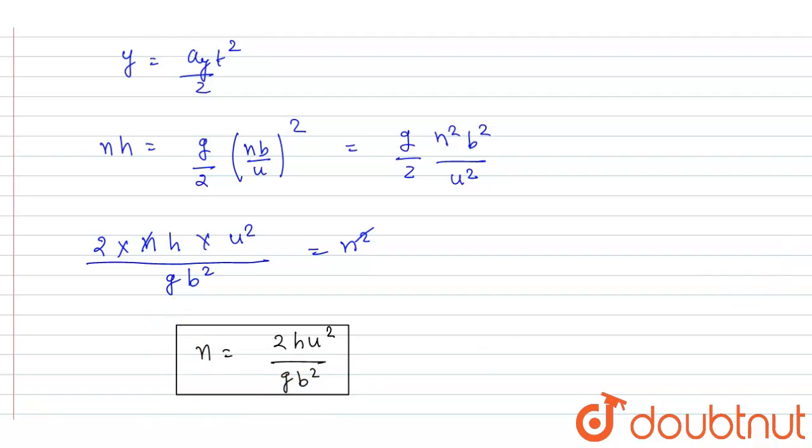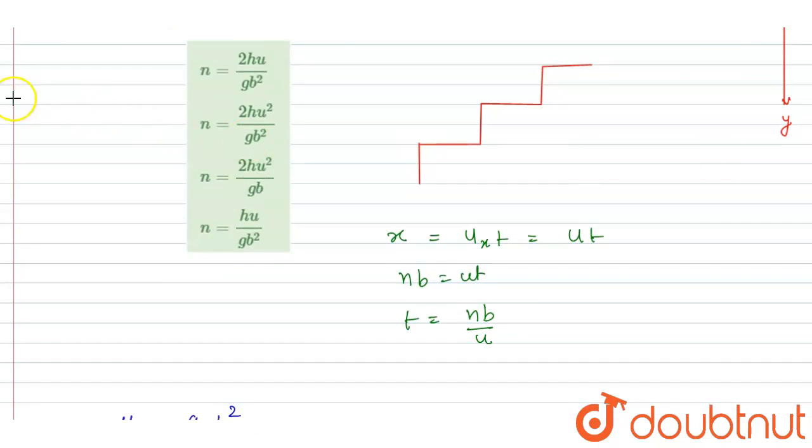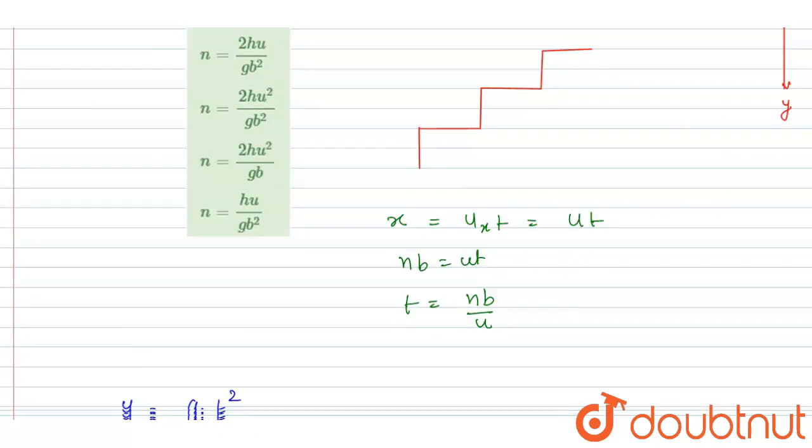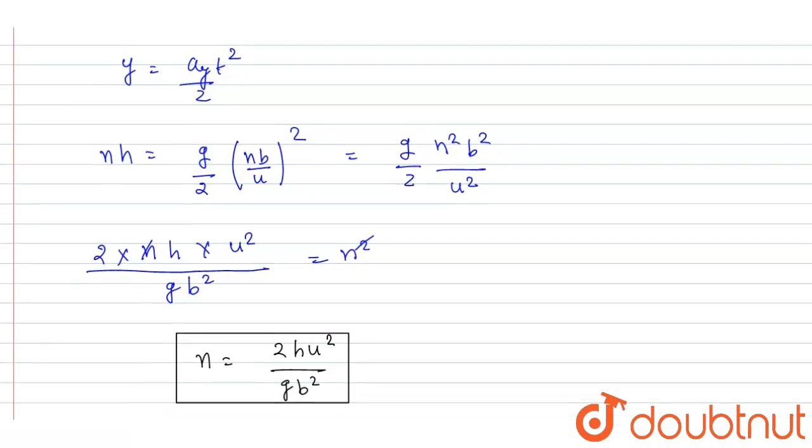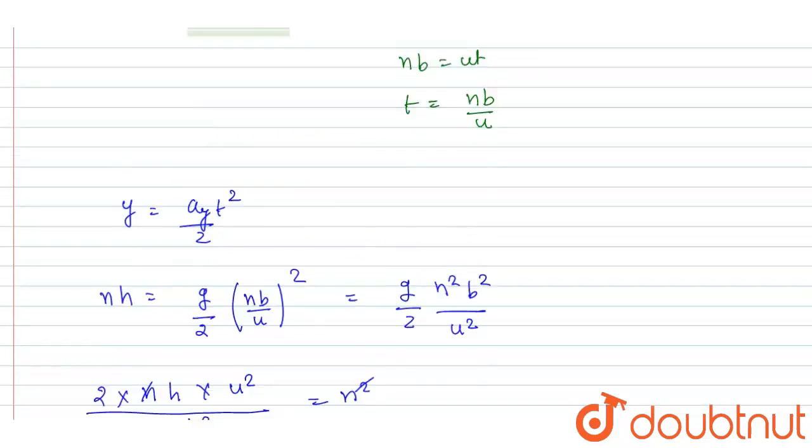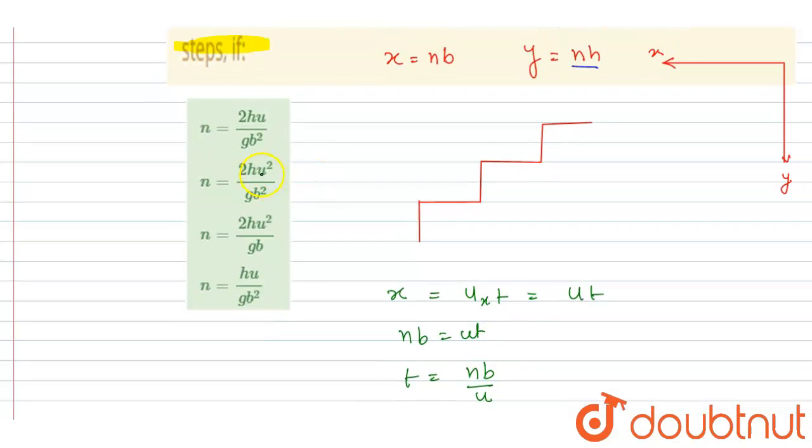Now you can check for the option. So if you see, the value of n is given. We got n equals 2hu² by gb². So now you can check: 2hu² by gb² is the correct answer. Thank you.